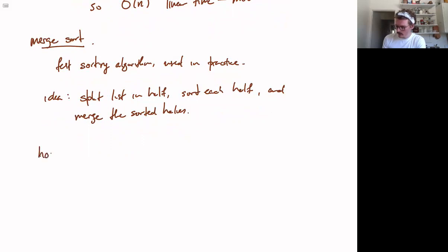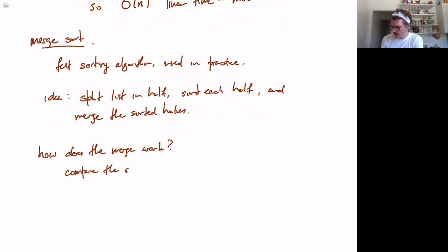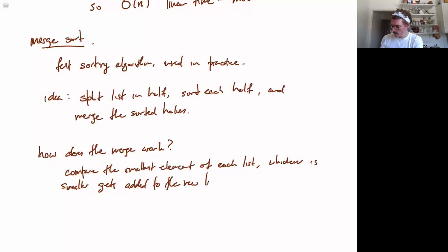How does the merge work? We need some process for taking two sorted lists and combining them into a single sorted list. The way it works is we compare the smallest elements — whichever one is smaller gets added to the new list — and then we repeat.